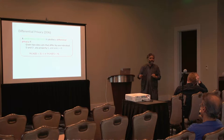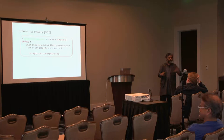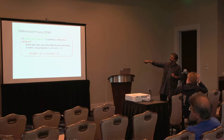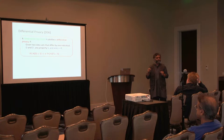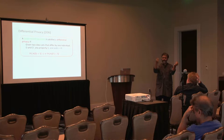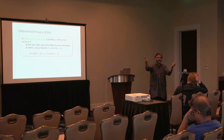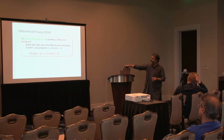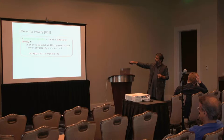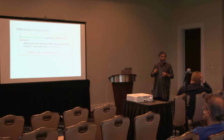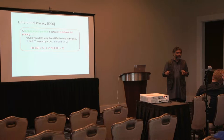What differential privacy says is that you need a randomized algorithm — no deterministic algorithm will work. A randomized algorithm satisfies epsilon differential privacy if, given any two neighboring databases that differ by one individual — imagine in one Devesh is present, in the other Devesh is absent — for any property S, the probability that the randomized algorithm on one dataset satisfies that property is very close to the probability that it satisfies that same property on the neighboring dataset.